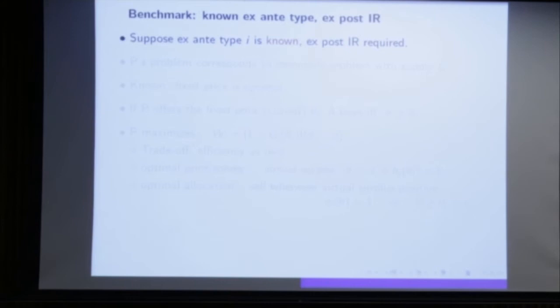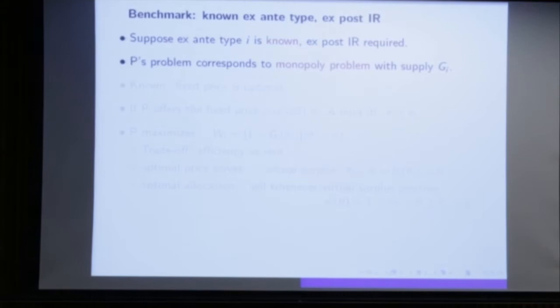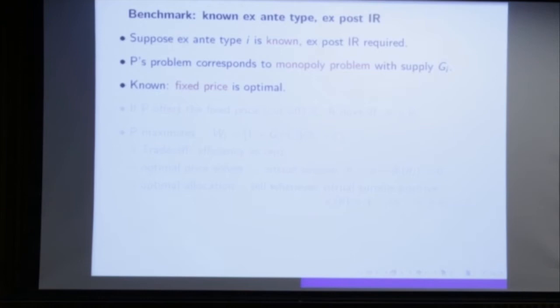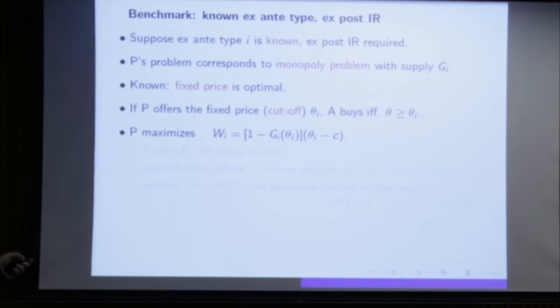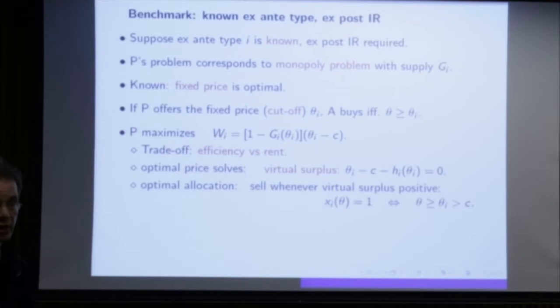First benchmark: assume the ex-ante type I is known and we have ex-post IR. Then we have a traditional monopoly problem — Baron-Myerson — where both principal and agent know that theta will be drawn from G_i. A fixed price is optimal: the principal offers a cutoff price theta_i. The agent buys if theta is larger than theta_i, and profit equals the probability that theta exceeds theta_i times the price. The optimal price is found where virtual surplus equals zero — that defines the critical price.